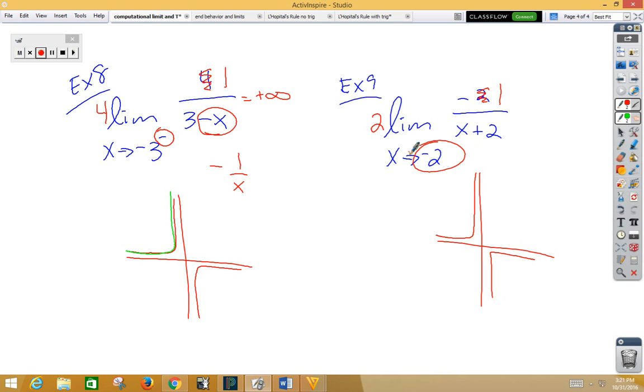Well, the left side limit is positive infinity. The right side limit, negative infinity. So, this would be a does not exist because they disagree with each other.